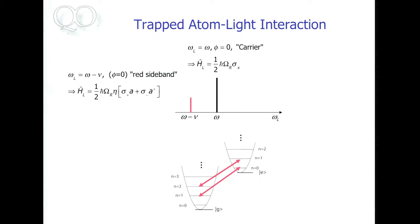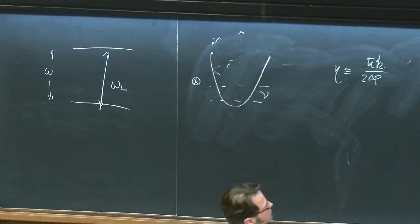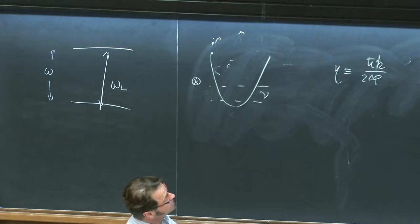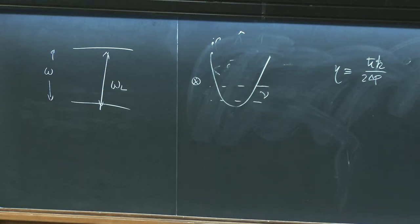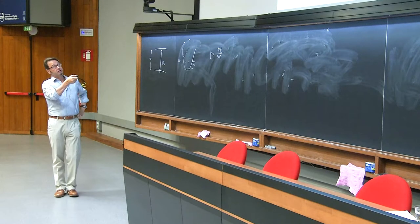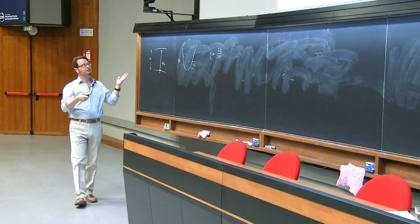The coupling strength is no longer just the Rabi frequency — it's eta times the Rabi frequency. Eta is the Lamb-Dicke parameter, which measures the linear momentum of a photon. If this Lamb-Dicke parameter is zero, all the fun disappears. There is no more coupling between internal and external states — you're left with no excitation.